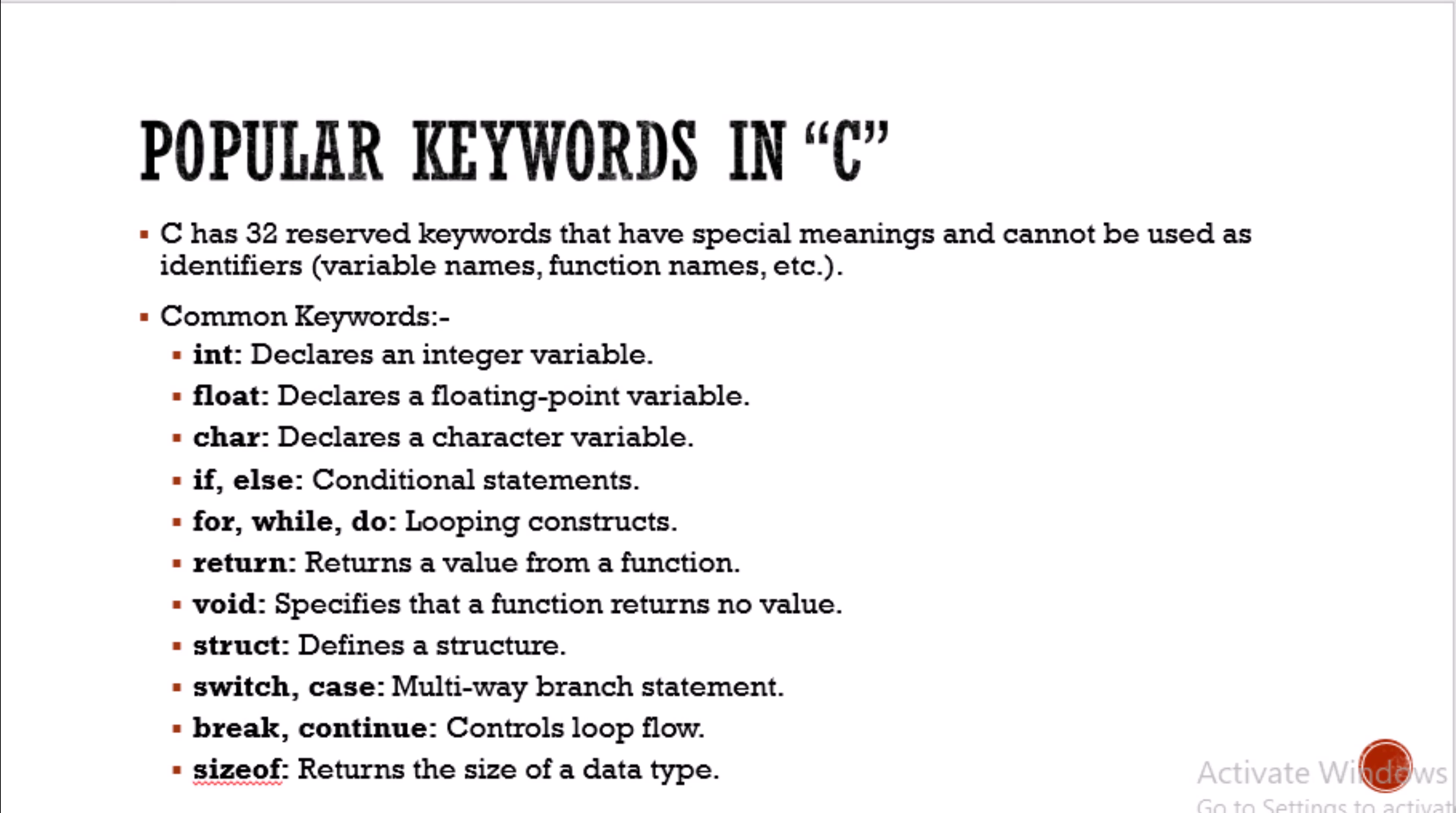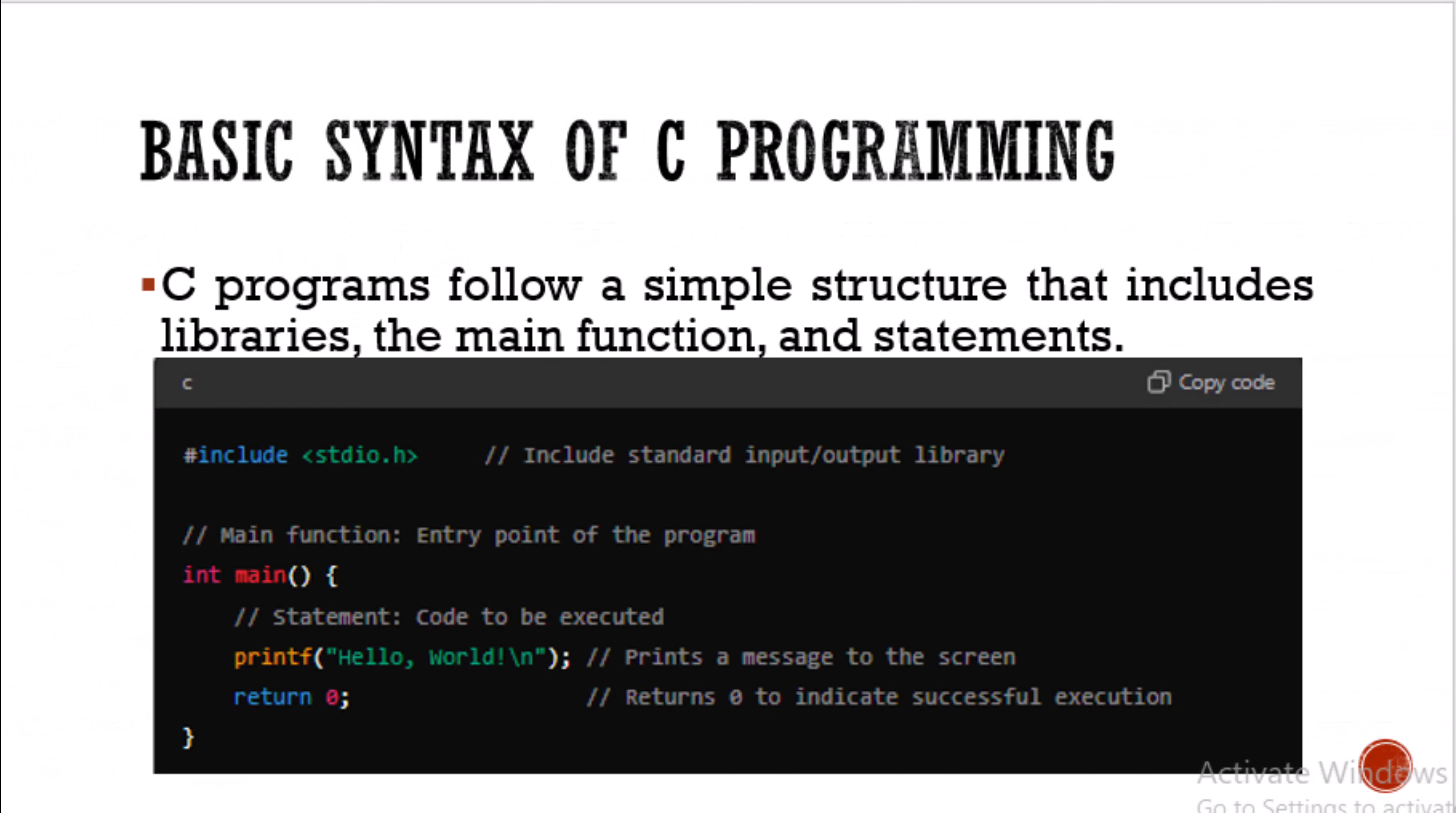First, you define all your libraries on top. Then you open your main function with a return type. It might be void when you're not returning anything, or we'll use int as a return type for online tools. If you have separate software like Eclipse, you'll use void if you're returning nothing.